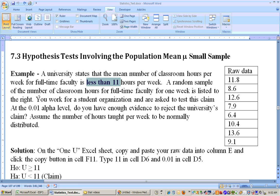It says a random sample of the number of classroom hours for full-time faculty for one week is listed to the right. Right here, we got it. And you work for a student organization or are asked to test this claim at the .01 alpha level. So that's the alpha level we're going to run this at. And do you have enough evidence to reject the university's claim? Well, let's see. We'll see what happens here with this. Assume the number of hours taught to be normally distributed. We have to do that because we have a sample size less than 30.